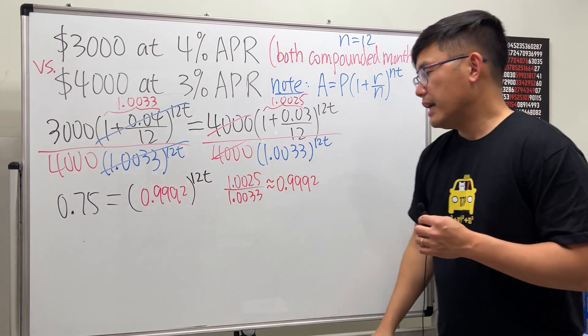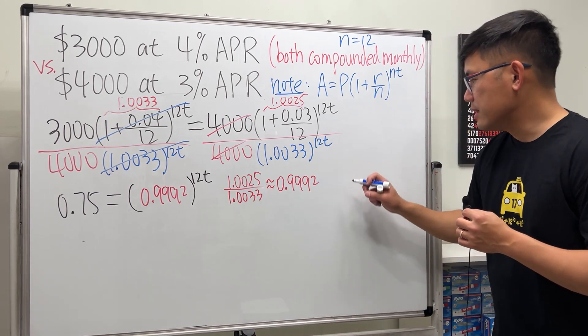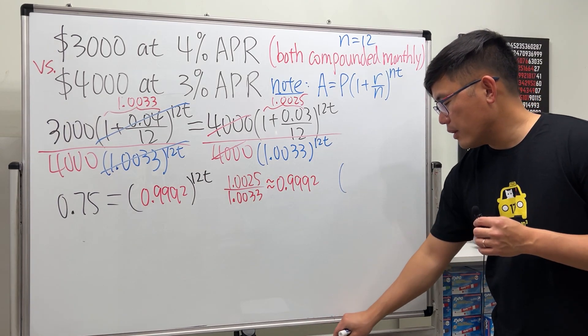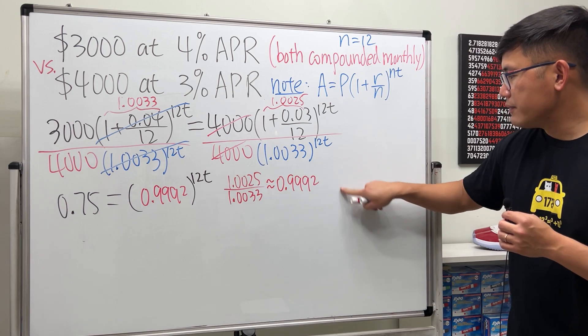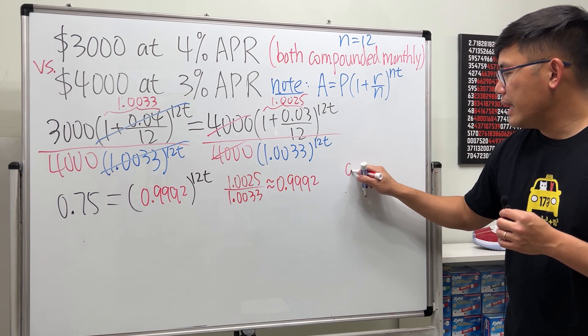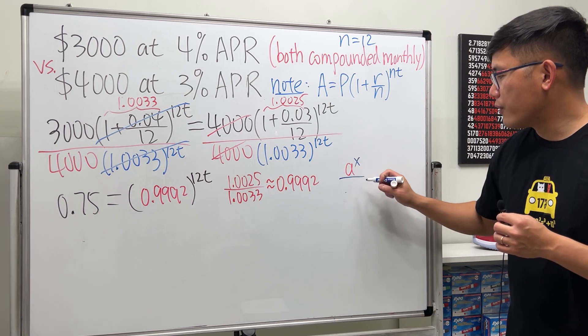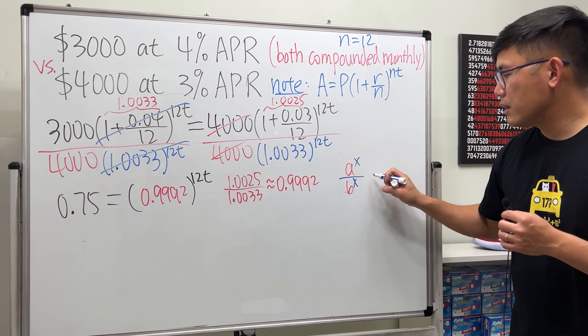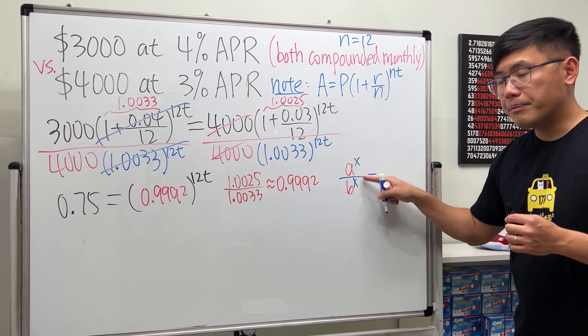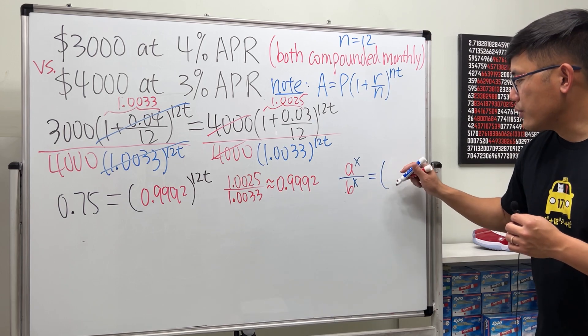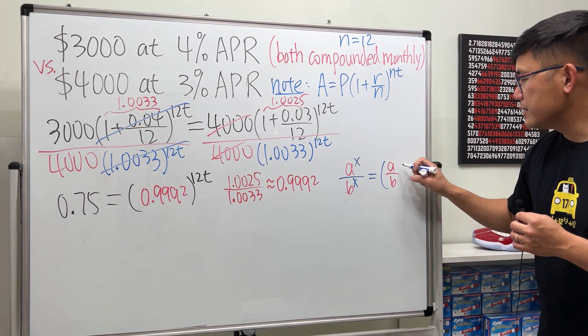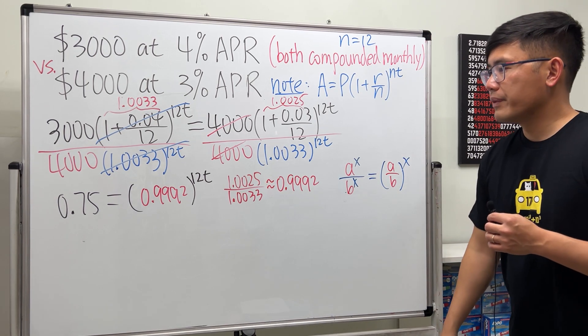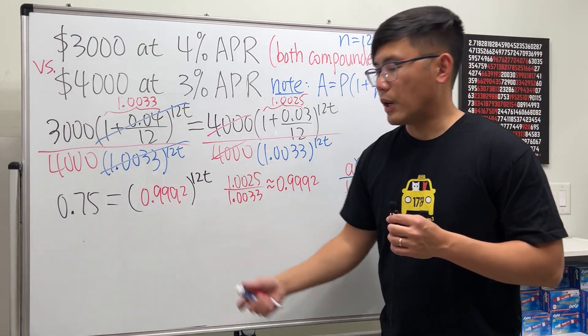When the powers are the same and if they are dividing, you can just divide the base by the base like that. The rule is when we have a^x over b^x - if they are the same exponent, you can just do a divided by b first and then raise to the x power. That's exactly how we did that right here.